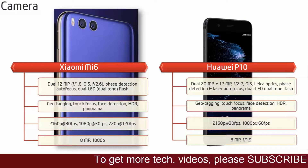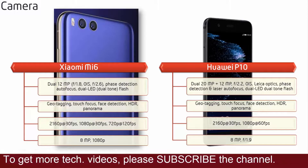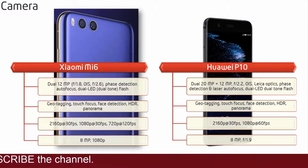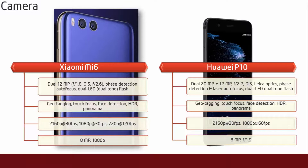Moving on to the primary camera of the P10, it is equipped with dual 20MP and 12MP cameras with Leica Optics technology, phase detection, auto focus and dual LED flash with dual tone. It shoots videos of 2160p and 1080p at 30 and 60 frames per second respectively. The P10 also comes with a secondary camera of 8MP with f/1.9 aperture and also with Leica Optics technology.